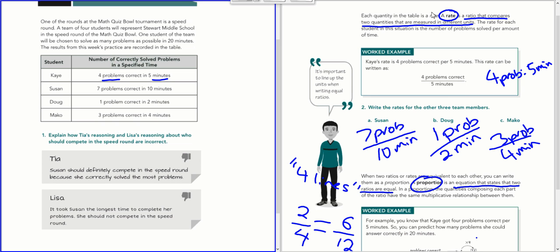This is an example of a rate, which is basically a ratio that compares two quantities measured in different units. Notice these are four problems correct in five minutes. This is different than another ratio where it was movies to movies. This is problems to minutes, different units, so this would be a rate.